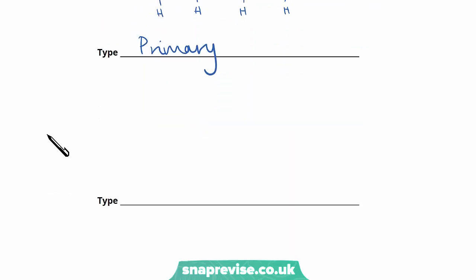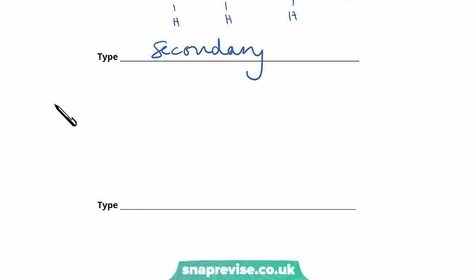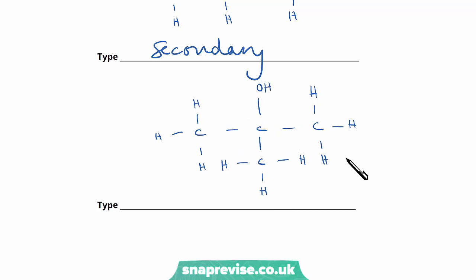For a second isomer, we could again have a four-carbon chain but this time have our OH group on our second carbon. We can see that the carbon our functional group is attached to is attached to two alkyl groups, so we have a secondary alcohol. For our third isomer, we could have a three-carbon chain with a methyl group and our functional group on our second carbon. You can see that the carbon our functional group is attached to is attached to three alkyl groups, so we have a tertiary alcohol.